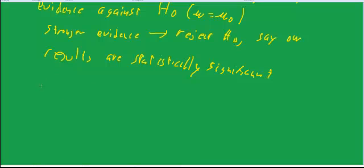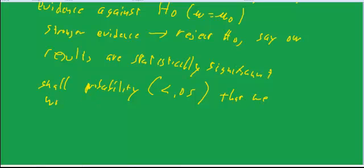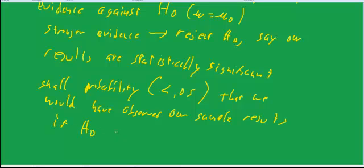So we say that there is a very small probability, and by statistically significant we mean that there is a small probability, less than 5% chance that we would have observed our sample results if the null hypothesis were true. And since that's a low probability, we choose to reject H-naught.